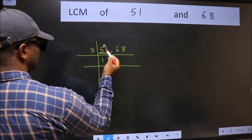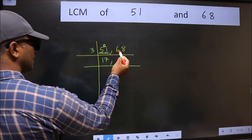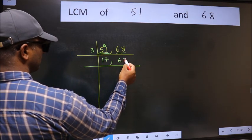2 carried forward gives 21. When do we get 21 in the 3 table? 3 times 7 is 21. The other number 68 is not divisible by 3, so write it down as it is.